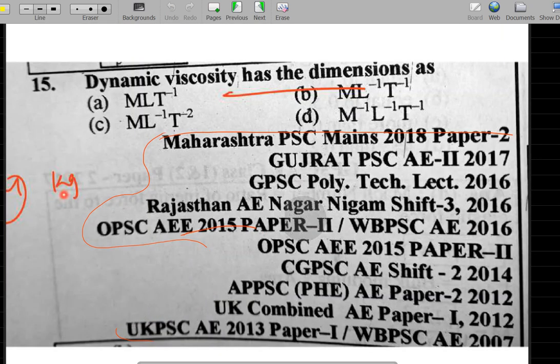Next, coming to question number 15. I will show you numbers of boards like level exams conducted all over India. Now we have a question: what is dynamic viscosity dimension? Mainly viscosity has two types: one is kinematic viscosity and another is dynamic viscosity. The kinematic viscosity is directly mentioned with the kinematic word, but if you have a dynamic viscosity question, it is not with dynamic word mentioned. Normally viscosity will be called dynamic viscosity. Why is option B correct?